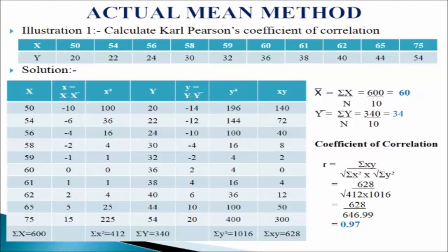Computing deviations: 50 minus 60 = minus 10; 54 minus 60 = minus 6; 56 minus 60 = minus 4; 58 minus 60 = minus 2; 59 minus 60 = minus 1; 60 minus 60 = 0; 61 minus 60 = 1; 62 minus 60 = 2; 65 minus 60 = 5; and 75 minus 60 = 15. In the third column we write x-squared: 100, 36, 16, 4, 1, 0, 1, 4, 25, and 225. Adding these values we get sigma x-squared equals 412.